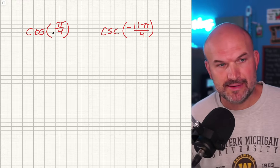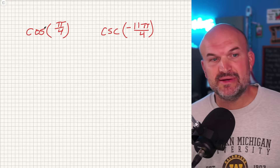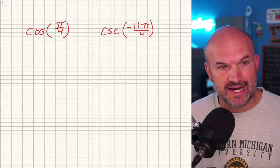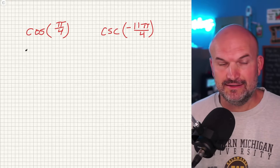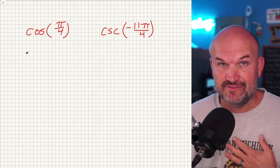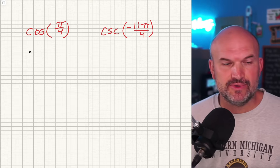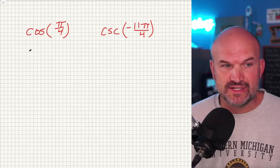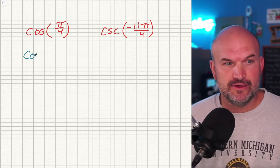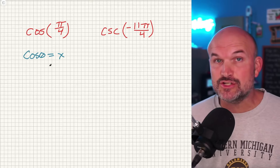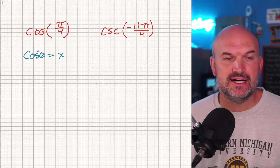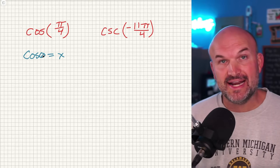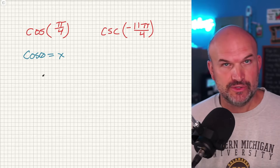The first example is the cosine of the angle π/4, and we need to evaluate that. One definition we can use here is that the cosine of theta represents the x-coordinate of the point that corresponds to that angle on the unit circle.